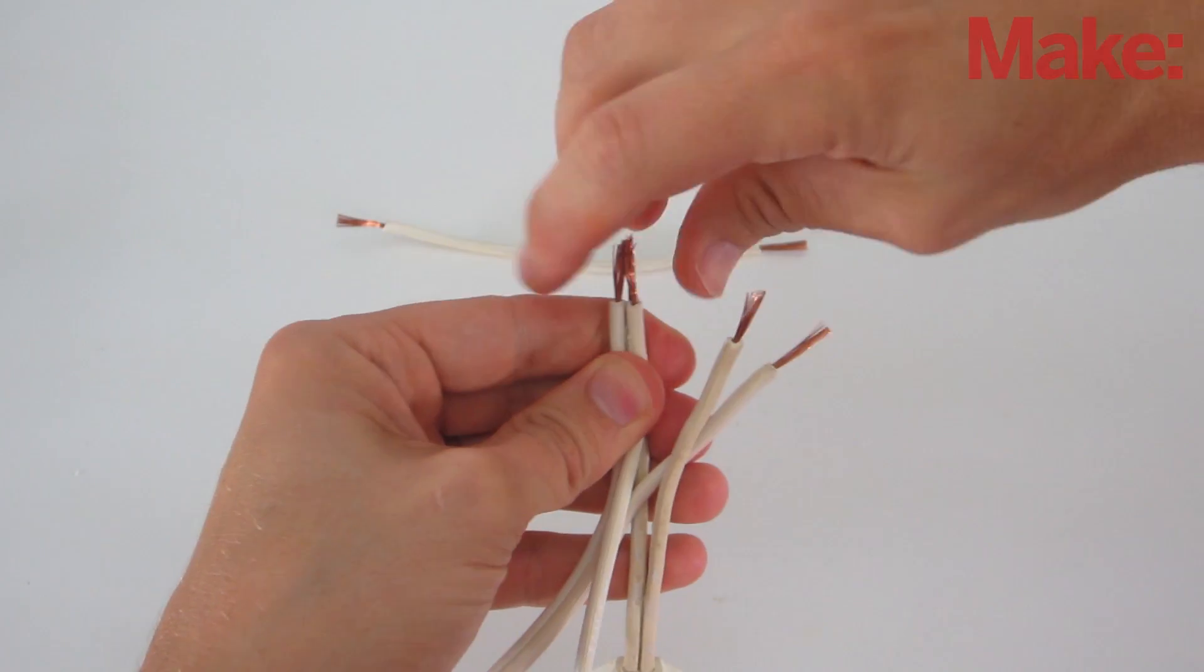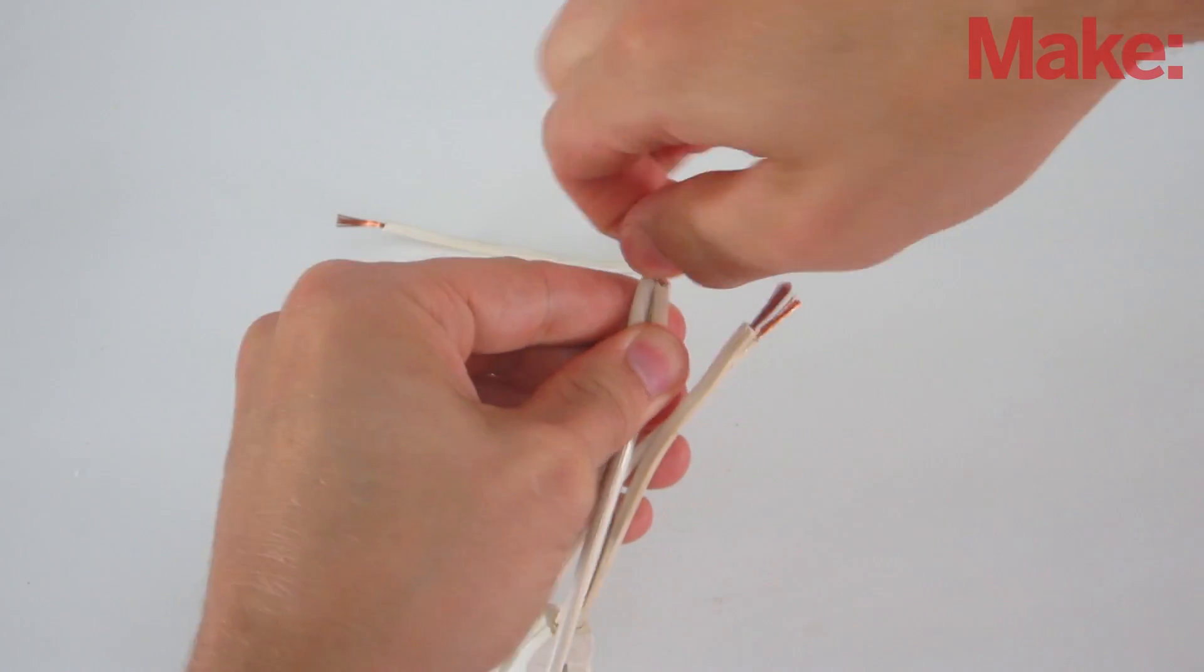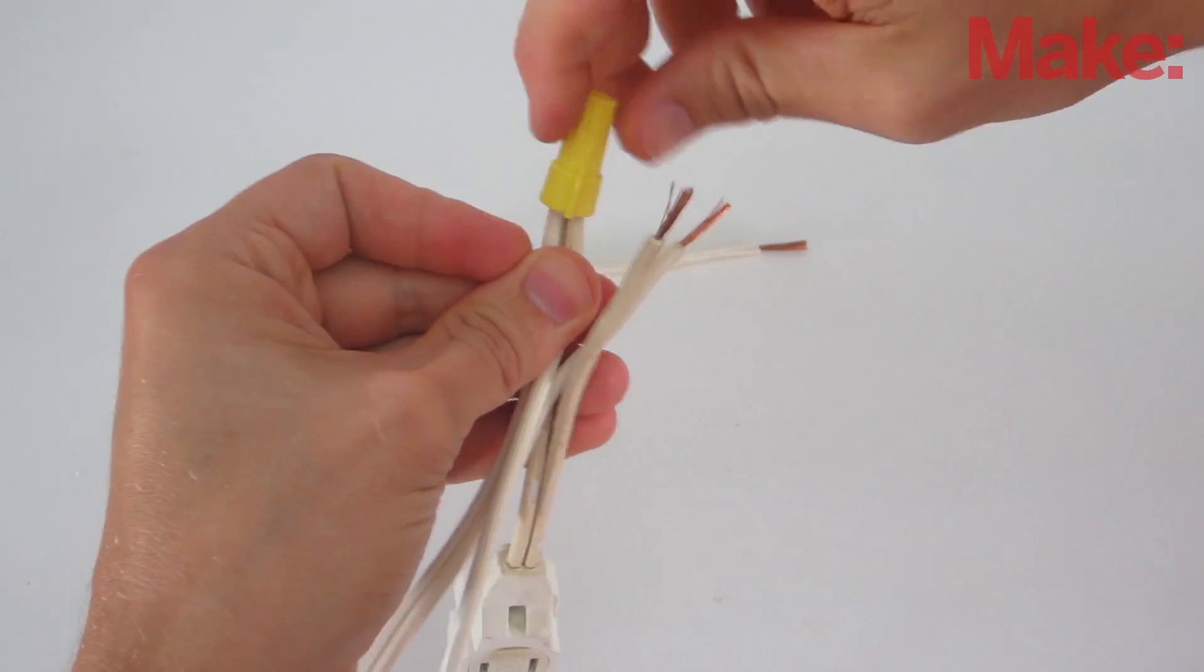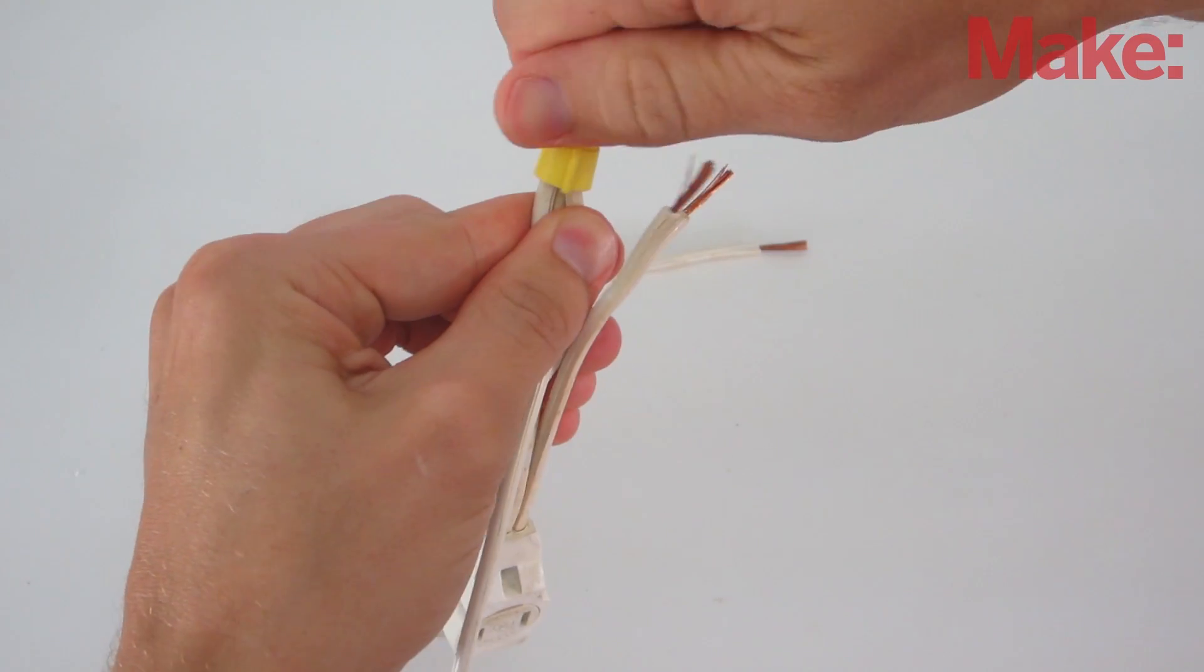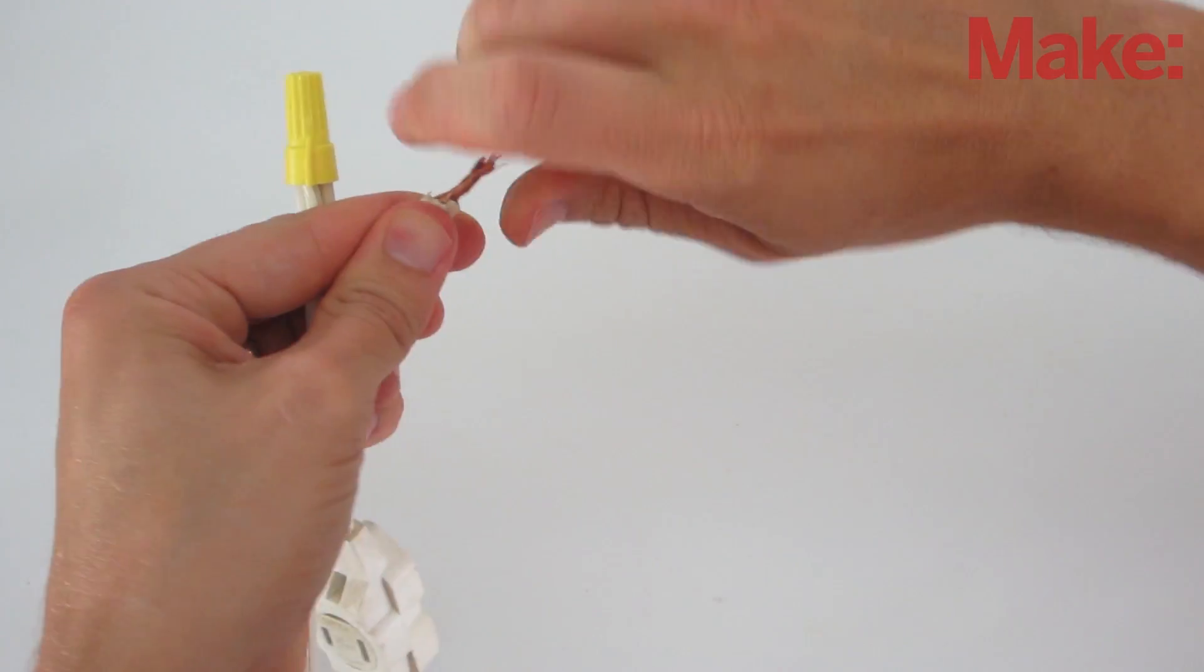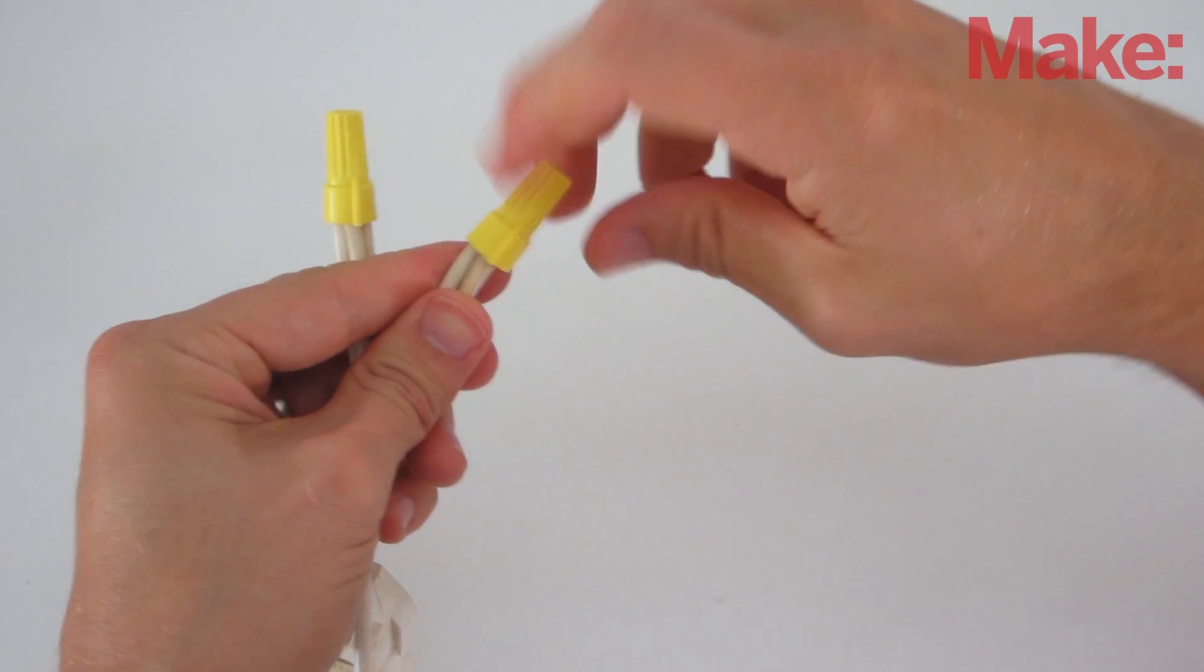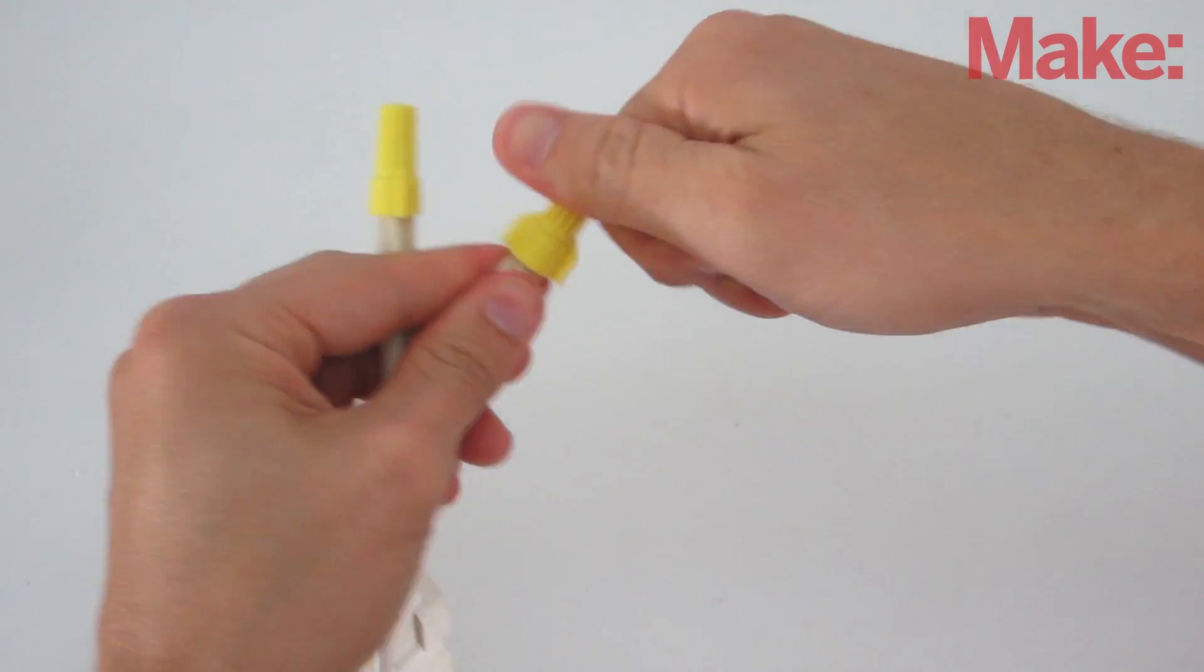Now, take one of the wires from the male end of the power cord, one of the wires from the female end of the power cord, and one of the short separated wires and connect these three with a twist-on connector cap. Then, take the other wire from the male end, the other wire from the female end, and the long separated wire and connect these with a twist-on connector cap.